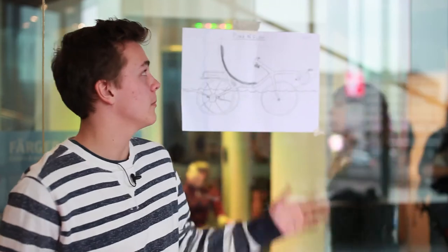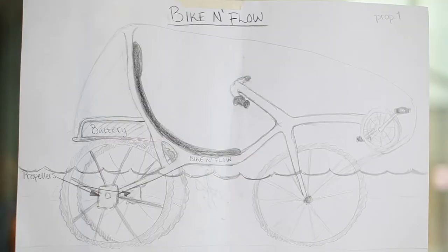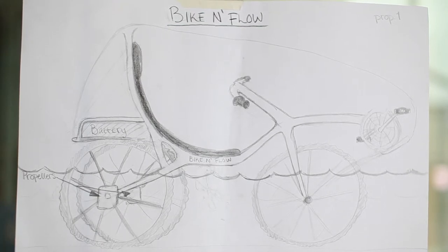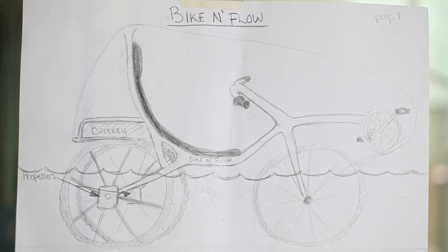My name is Jacob and my group has developed Bike & Flow. It's a result of the problem where, how to bike in a city that's flooded. And the solution, of course, is Bike & Flow. And it's a prototype bike right now.